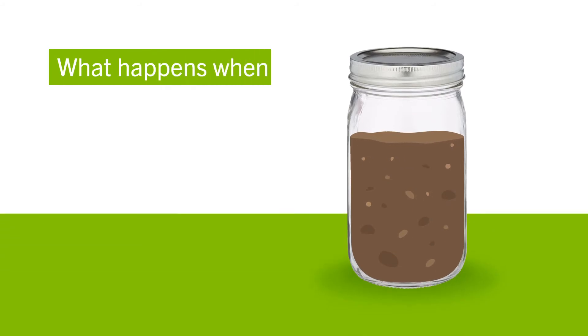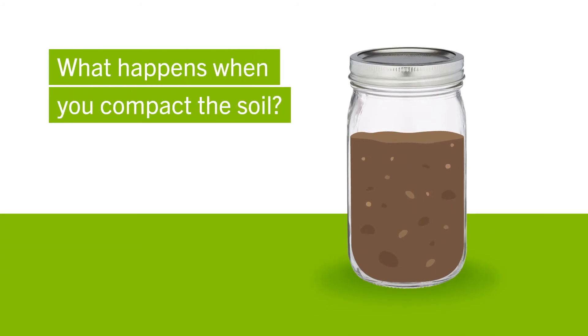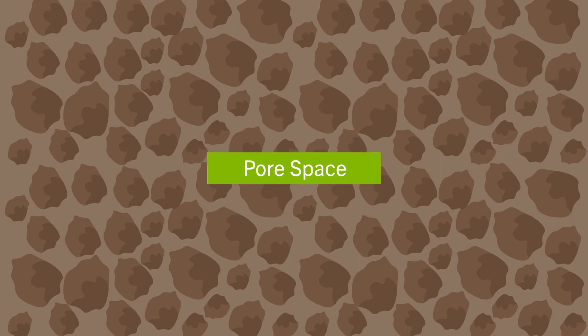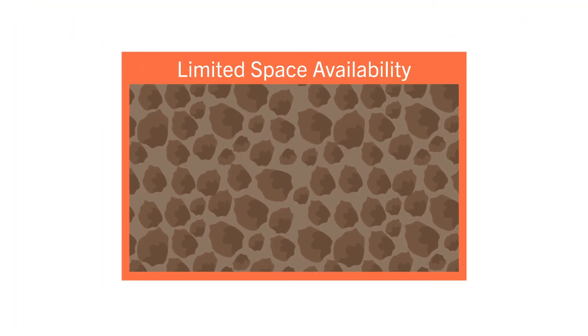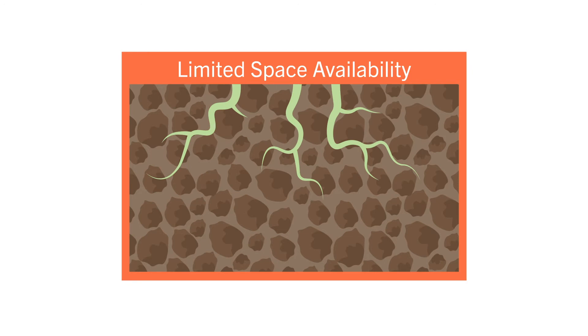What happens when you compact the soil? Think of the soil being pressed together, reducing pore space — space that contains both gases and water. When you compact soils, you limit your space available for root growth. You make it too hard for those roots to grow and proliferate through the soil.